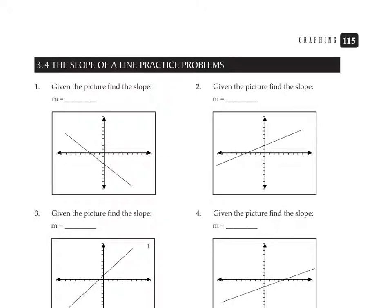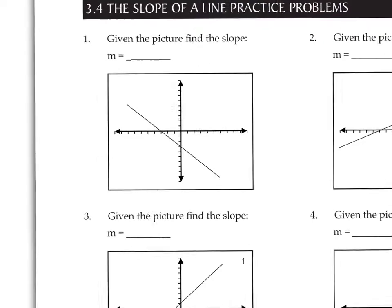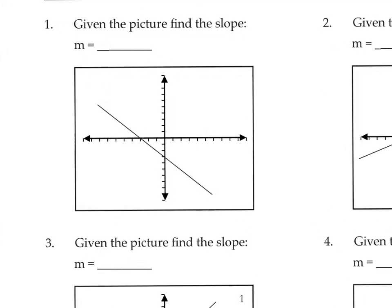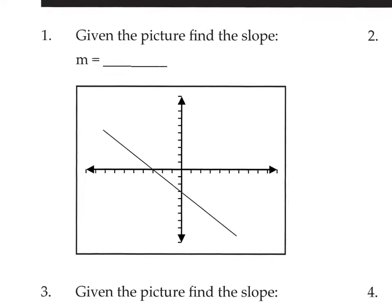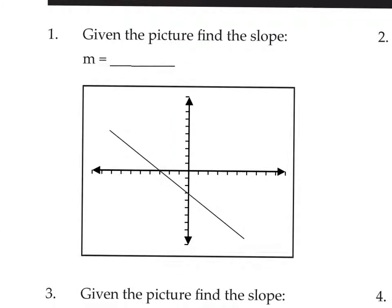We're going to do some extra practice for finding the slope of a line. We have four graphs here that we're going to practice finding the slope from the graph. That's going to require us to identify some points and make some triangles so we can count rise and run.